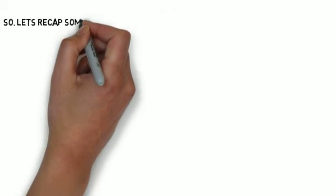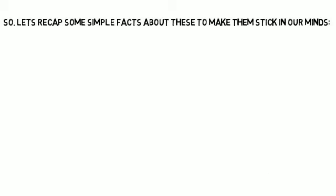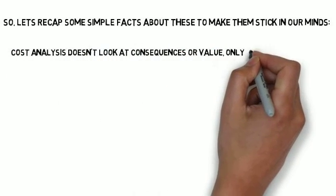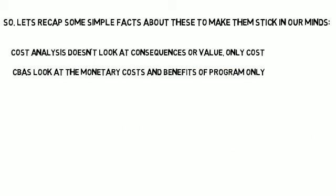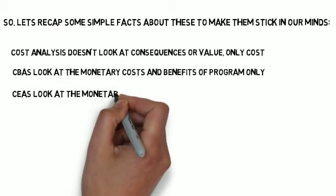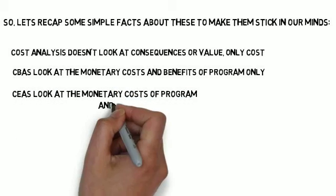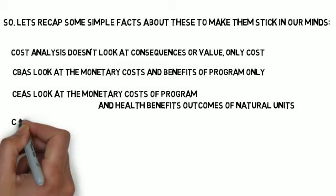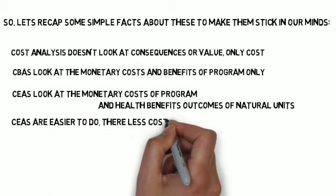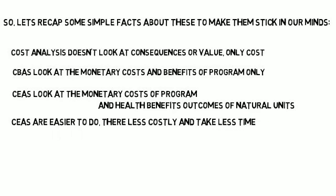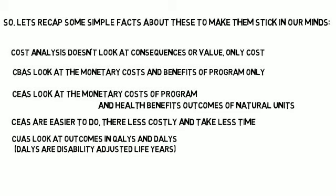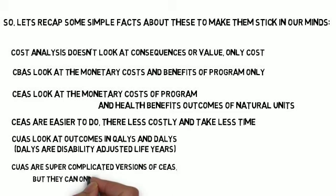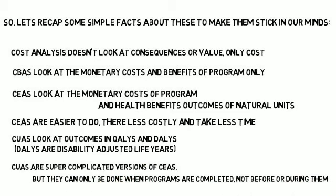Let's recap some simple facts about these. Cost analysis doesn't look at consequences or value, only cost. CBAs look at the monetary costs and benefits of a program only. CEAs look at the monetary costs of a program and health benefit outcomes of natural units. CEAs are also easier to do, less costly, and take less time. CUAs look at outcomes and qualities in DALYs — disability adjusted life years. CUAs are super complicated versions of CEAs, but they can only be done when programs are completed, not before or during them.